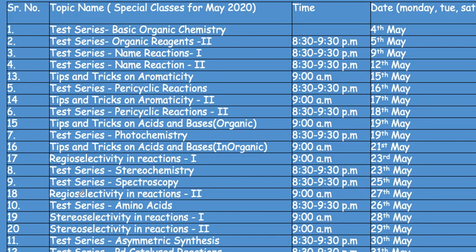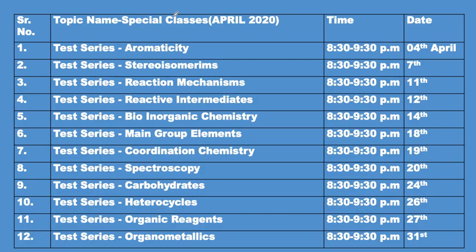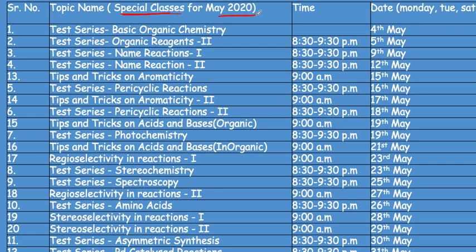In this video I will be telling you about my free classes — the special classes — for the month of May 2020. As you can see, there are a lot of sessions: test series sessions and tips and tricks sessions, for example tips and tricks on aromaticity. In the test series sessions, I am making you solve all the previous year questions from the GATE paper as well as the CSIR paper on topics like basic organic chemistry, reagents, and name reactions.